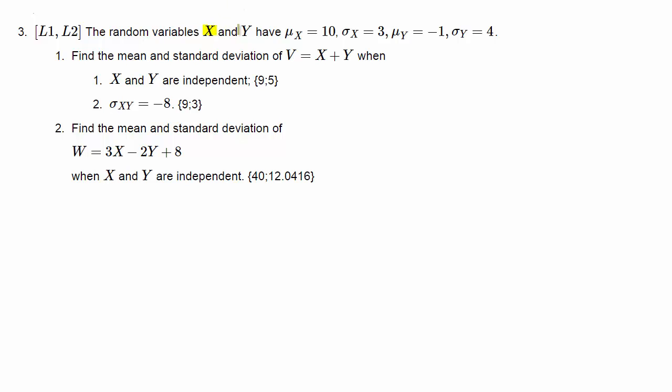In this question, we are given information about two random variables. We know their means, μ's, and their standard deviations, σ's, for X and Y. The expected value μ_X is 10, expected value of Y μ_Y is -1, and the variances are just the squares of the given standard deviations.